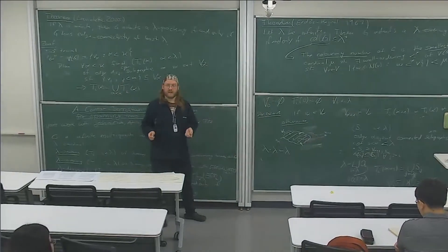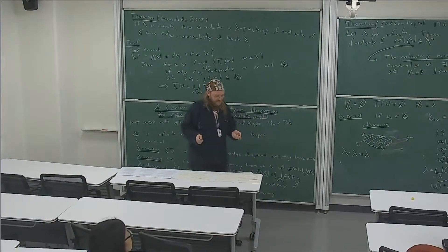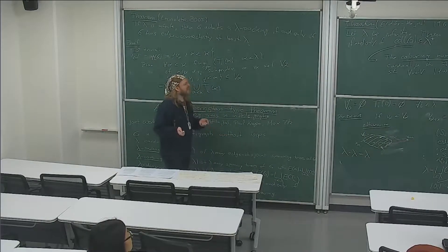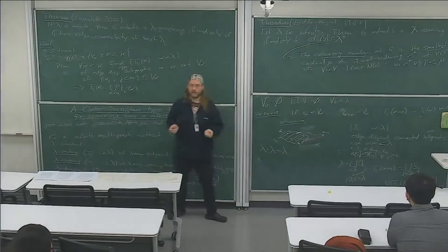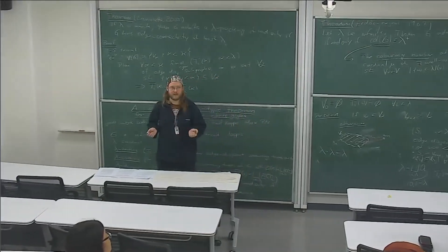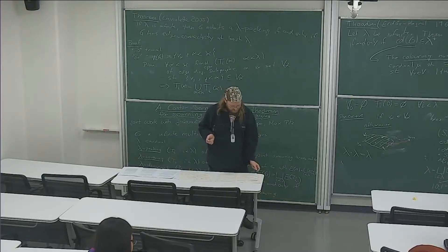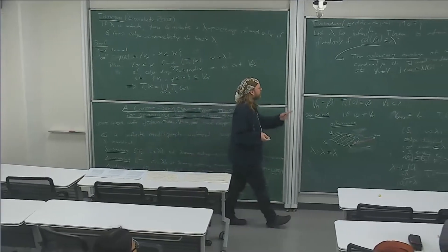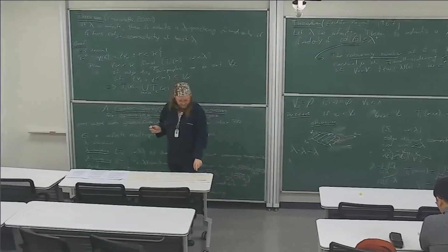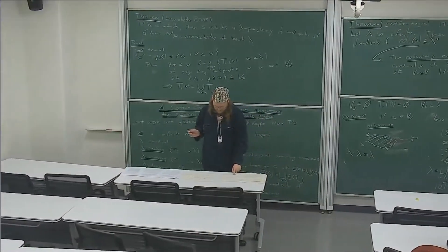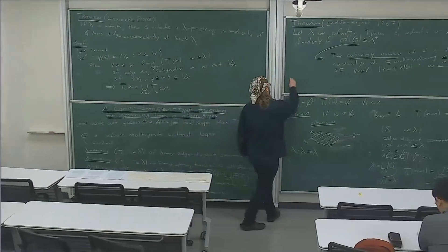The coloring number is called that because for finite graphs, this is precisely the number where the greedy algorithm would color the graph. Such a well-order I will call a good well-order. Let me prove the theorem.